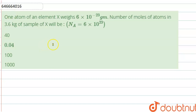The question is: one atom of an element X weighs 6×10⁻²³ grams. The number of moles of atoms in 3.6 kg of sample X will be — given Nₐ = 6×10²³.